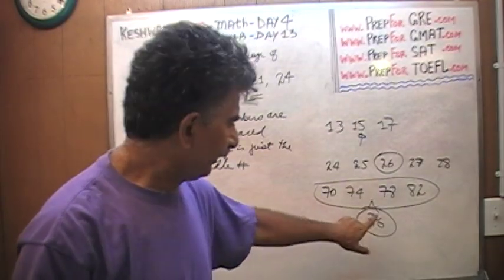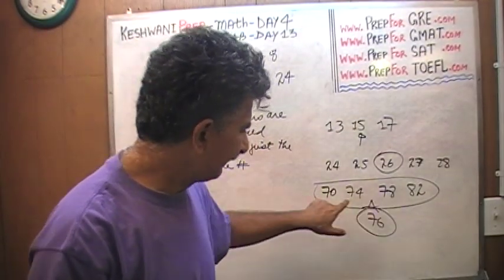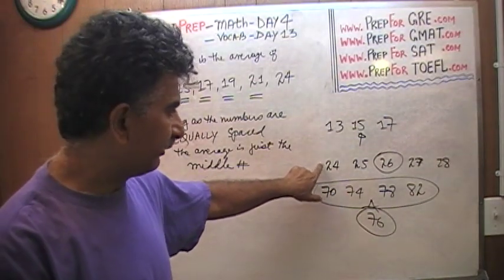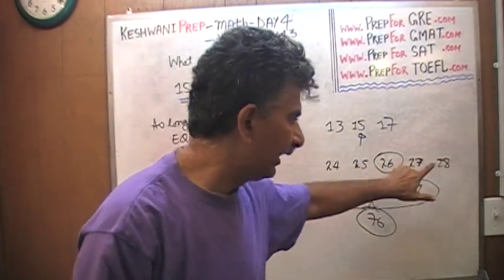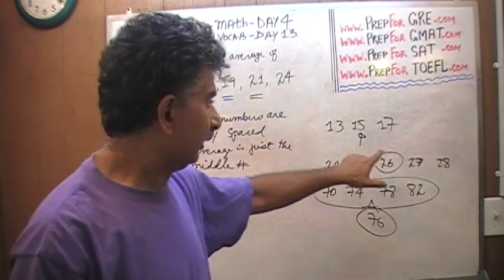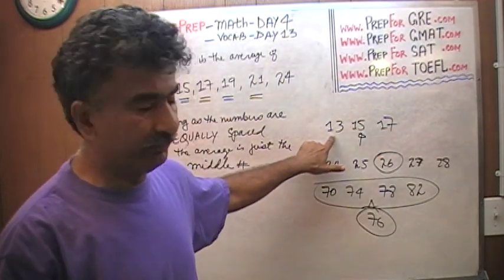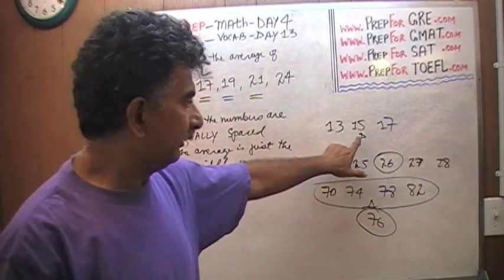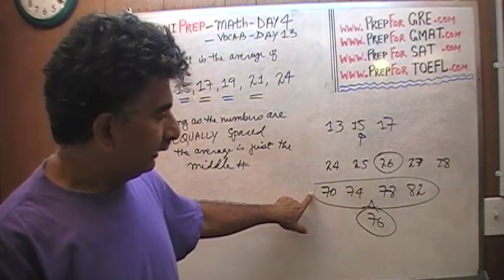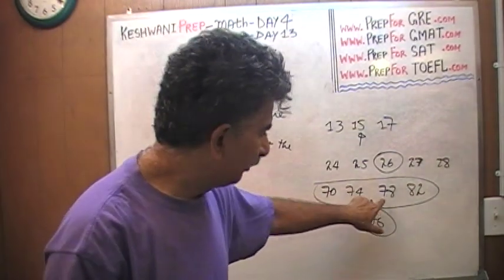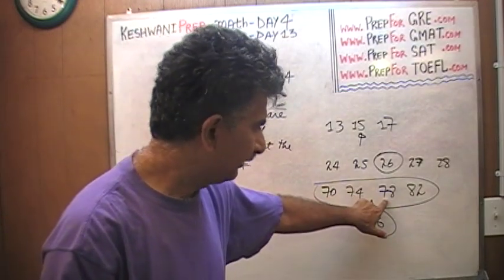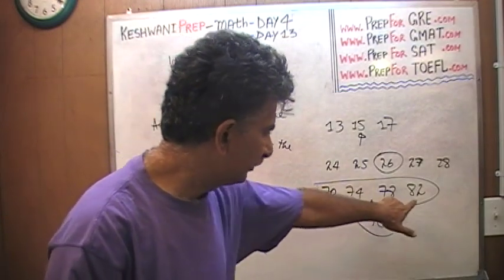That is the middle of the thing. This is 74, it jumps to 78, and since we have even number of numbers—see here we have odd number of numbers, we have five numbers, one, two, three, four, five. When you have odd number of numbers, it's very easy to locate the middle number. Here we have three numbers, one, two, three, odd number of numbers, the middle number is very simple to locate. But when we have even number of numbers, the average is the middle of the middle two numbers, is the midpoint of the middle two numbers. Here, 74 to 78, the midpoint is 76, that's the average of these four numbers.